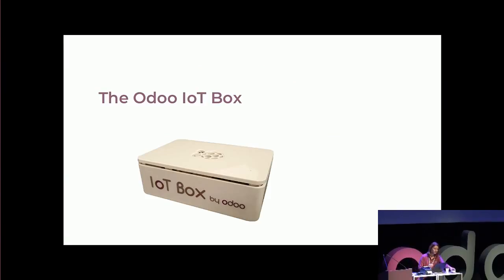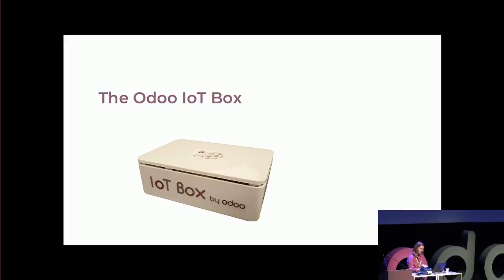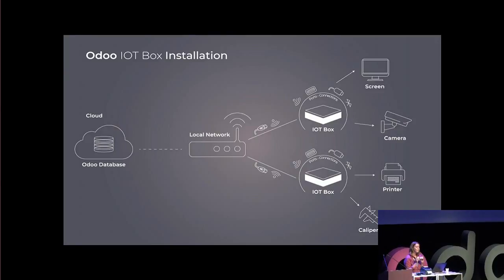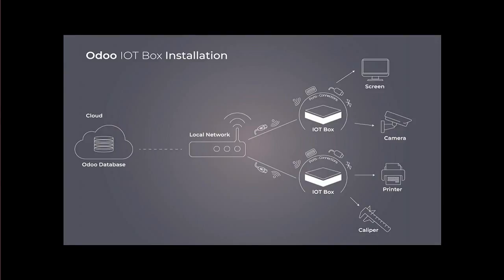Let's have a look at the new Odoo IoT box. It's a small box that contains a Raspberry Pi — a tiny computer that will allow the communication between your database and the different devices. The box will be connected to your database using an ethernet cable or with a Wi-Fi connection. As you can see on the picture behind me, you can have several IoT boxes connected to a single database. You will then connect the devices to the box using USB, Bluetooth, HDMI, or Wi-Fi.